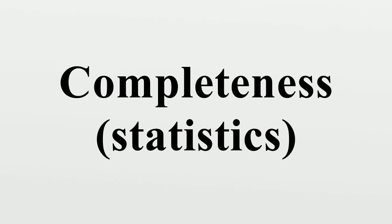The exponential is not 0, so this can only happen if g is 0 almost everywhere. Relation to sufficient statistics: For some parametric families, a complete sufficient statistic does not exist. Also, a minimal sufficient statistic need not exist. Under mild conditions, a minimal sufficient statistic does always exist. In particular, these conditions always hold if the random variables are all discrete or are all continuous.